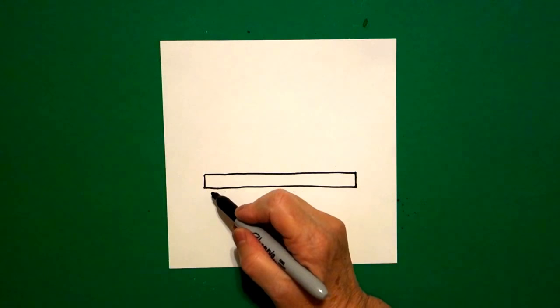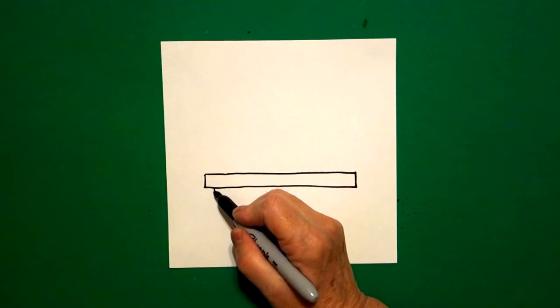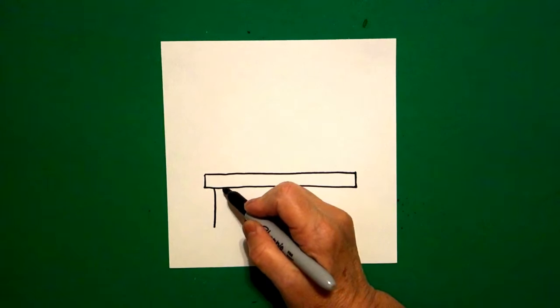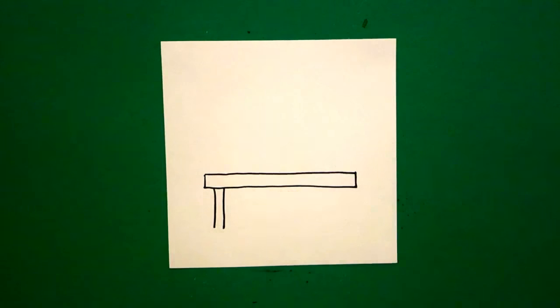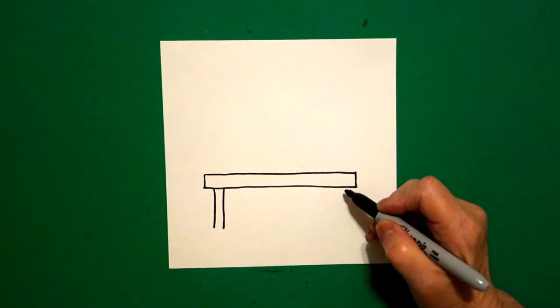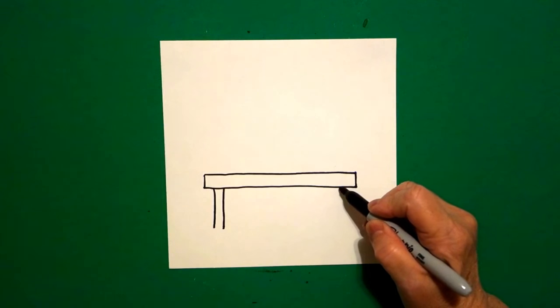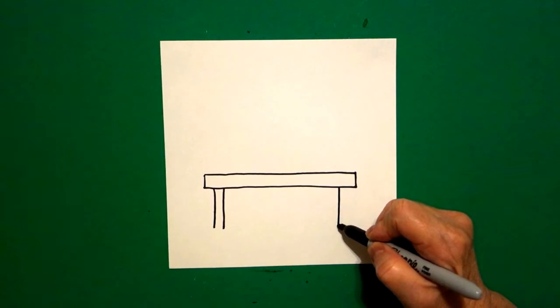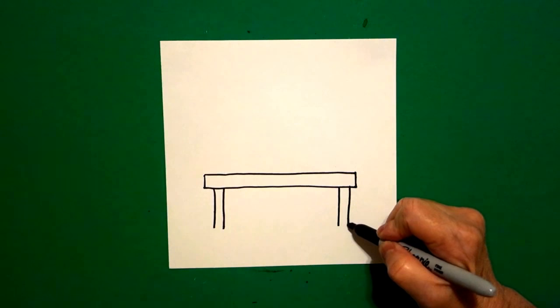I come over to the left and I come in a little space and I draw one, two straight lines. I come over to the right hand side, come in a little bit and I draw one, two straight lines.